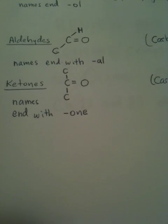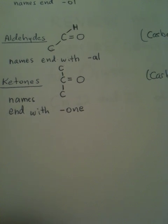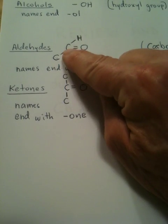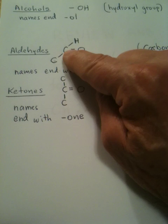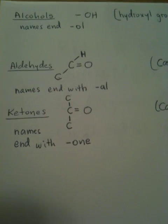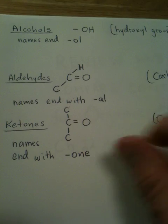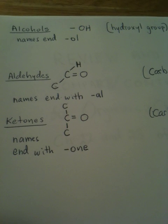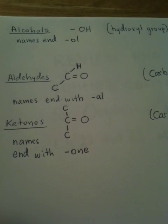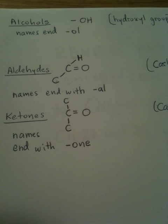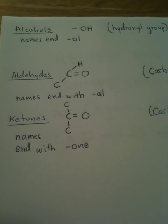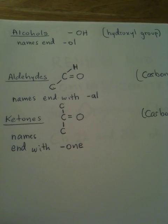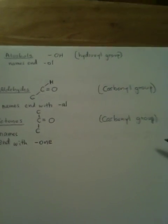If we were naming this aldehyde, this would be ethanal. There's no number with it because the carbonyl carbon is always number one, so we don't need to say it's on number one — if it's an aldehyde, it's automatically number one. If there were three carbons, we would call it propanal. If there were four carbons, we'd call it butanal. And that is the way we can always tell alcohols, aldehydes, and ketones apart — the ways in which they're similar, and the ways in which they're different.